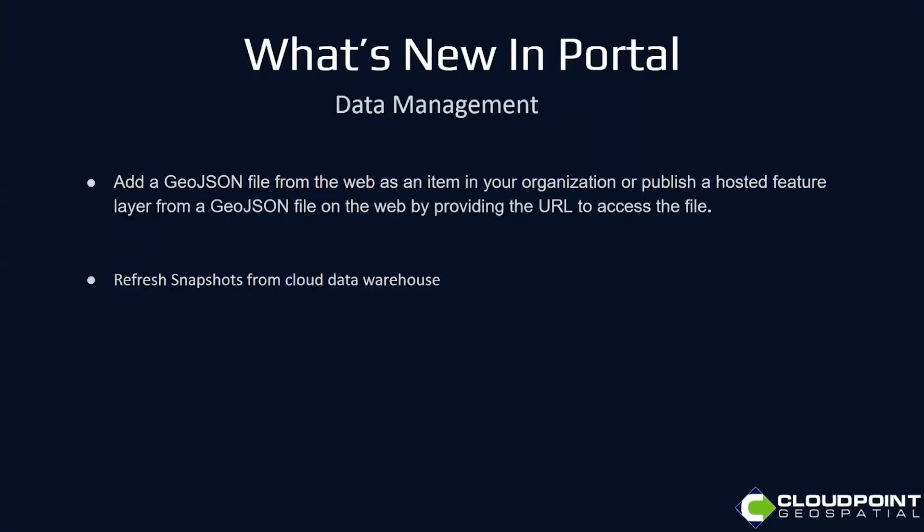In data management: you can now add a GeoJSON file from the web as an item in your organization or publish a hosted feature layer from a GeoJSON file by providing the URL. There is also a refresh snapshots from cloud data warehouse feature — if you publish a map image layer or feature layer from a cloud data warehouse in ArcGIS Pro, the data is copied to the relational data store. Now if that source data changes, you can easily refresh the snapshot from the layers page in portal.